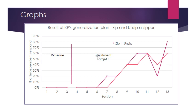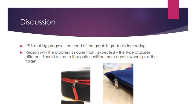Overall, KP is making progress in learning to use the zipper, as the graph is gradually increasing. However, the learning process is taking longer than expected. The main reason is that the type of zipper is different — the zipper on his lunch bag has a small piece of fabric attached, making it easier to grip and zip. The zipper on the pencil pouch has nothing attached, so he really needs to use his fingers to grip it, which takes longer to learn.